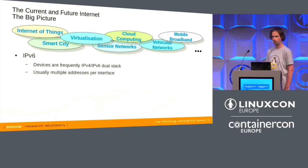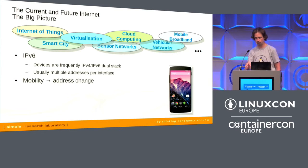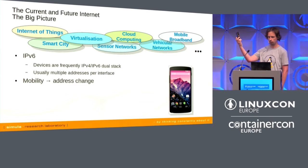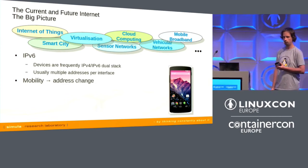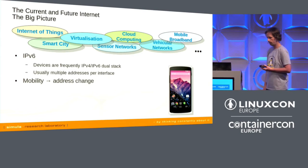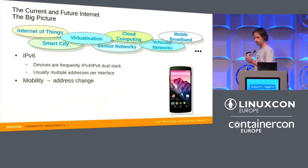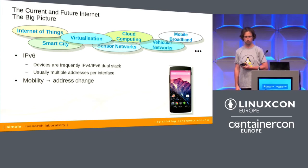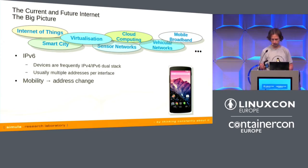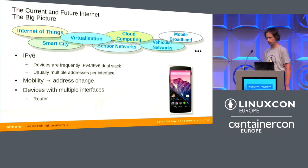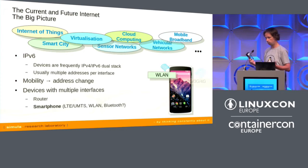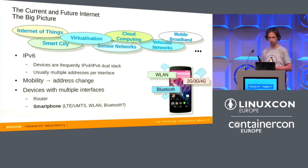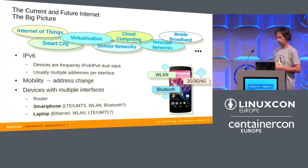Today we have ubiquitous mobility. Everybody has a smartphone, and when you use it here in the room you'll have a certain IP address from the wireless network. If you walk outside the hotel you'll get another IP address from your mobile broadband provider. If you start a download here and go outside, your download will be interrupted because the IP address changes and TCP cannot handle this. There are also frequently devices with multiple network interfaces — your smartphone has mobile broadband, LTE, UMTS, wireless LAN, Bluetooth — and your laptop as well.